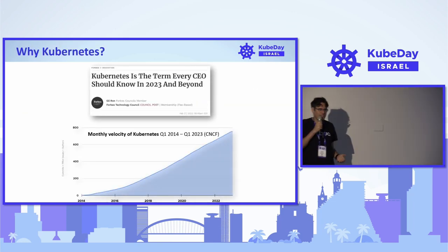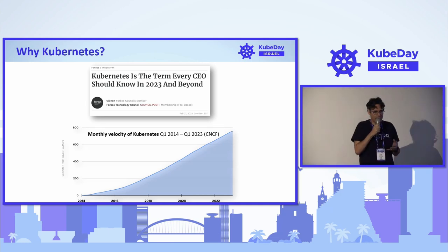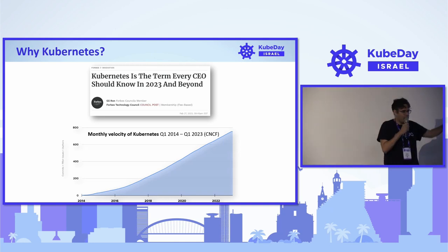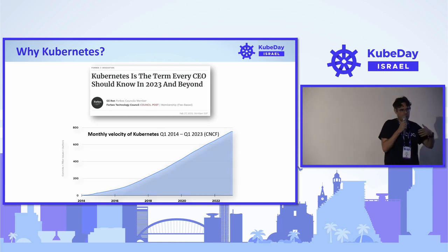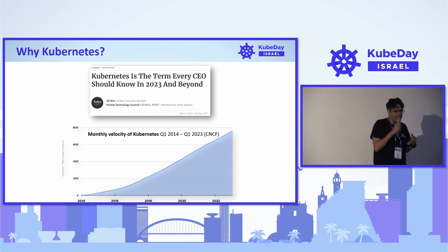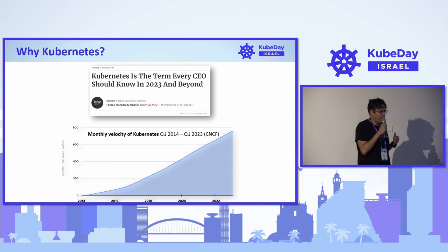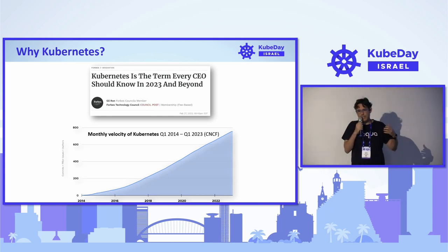Why Kubernetes? We're at a Kubernetes conference and in 2023 you can't be a CEO without knowing what Kubernetes is. The commits and work on Kubernetes have been increasing over the years, as has the usage — it has basically become the gold standard. Cloud service providers such as AWS and Azure have reduced the level of complexity and it can be as easy as pushing a button to create a cluster.